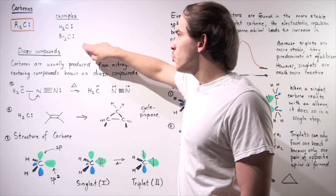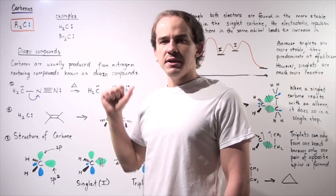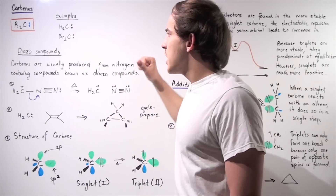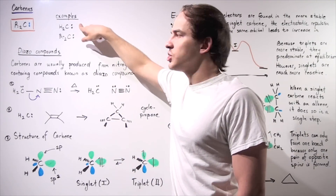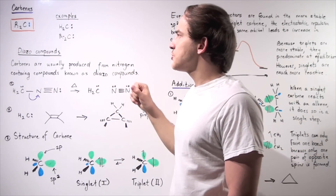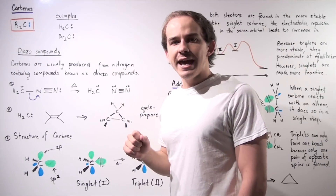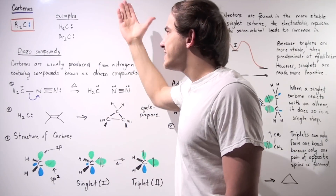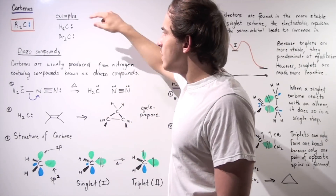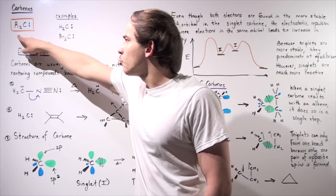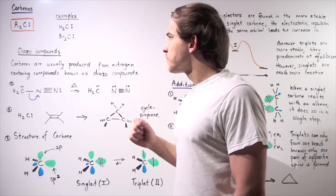Here are two different examples of carbene molecules. The simplest carbene molecule has the central carbon attached to two identical H atoms. A second type of carbene has the R groups replaced with bromine atoms.